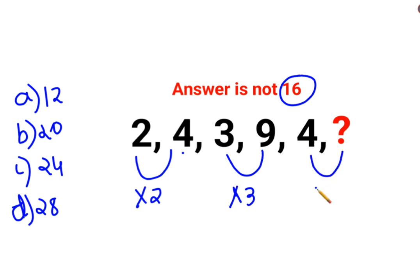And that is why we thought that here we should have 4 multiplied by 4, but the answer is not 16. It's not a part of your options. Then in that case, what we should do?